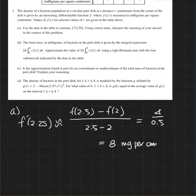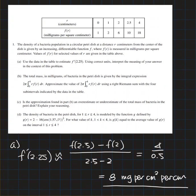Number b: approximate the value of 2 pi integral 0 to 4 of r times f of r dr using a right Riemann sum with the four subintervals indicated by the data in the table.